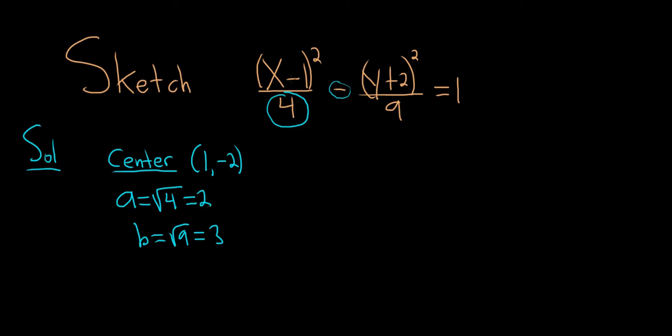So we found the center by switching the signs. a is always the square root of this number, b is always the square root of this number.